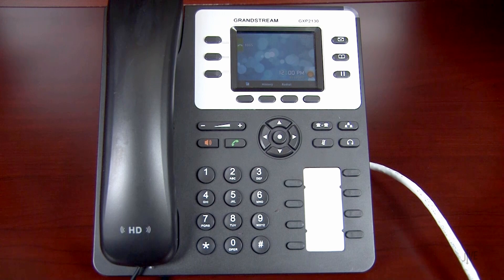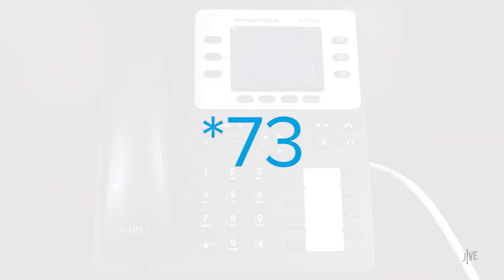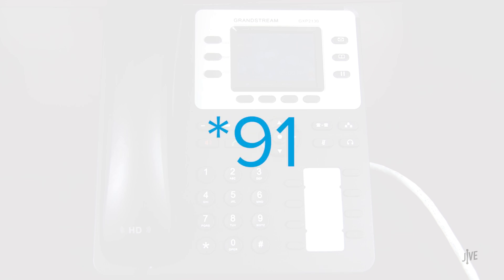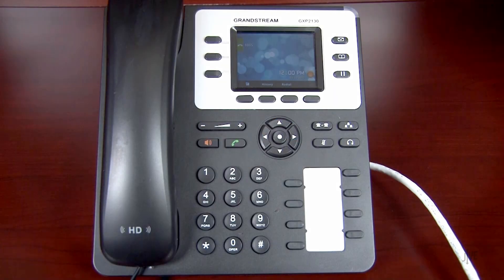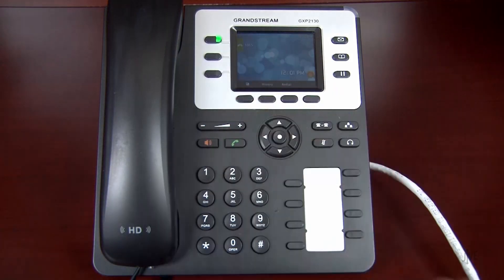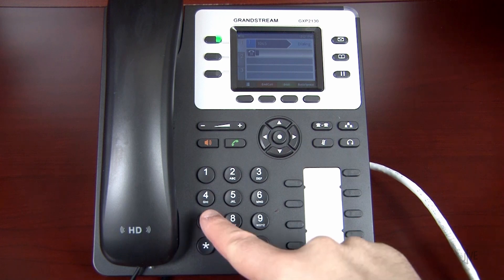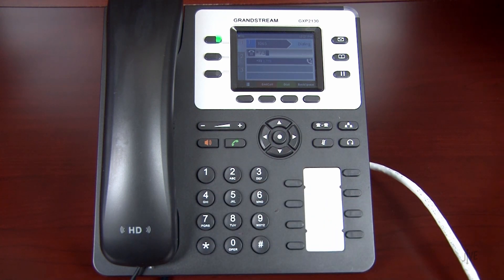There are also corresponding star codes to disable call forwarding. Star 73 is for All or Unconditional. Star 91 is for Busy. And Star 93 is for No Answer or Delayed. Call forwarding deactivated.